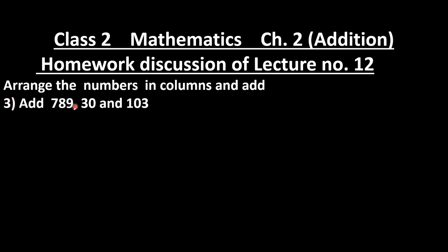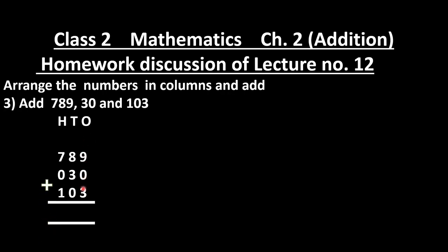Question 3: add 789, 30 and 103. Write places — 30 is a two-digit number, so write 0 at hundreds place. At ones: 9 plus 3 — count three after 9: 10, 11, 12 — write 2, carry 1. At tens: 8 plus 3 — count: 9, 10, 11 — write 1 with carry giving 2, carry 1. At hundreds: 7 plus 1 is 8, plus carry 1 is 9. Our answer is 922.